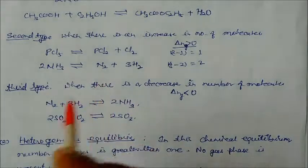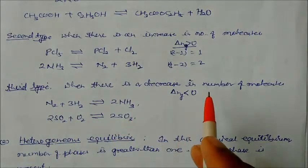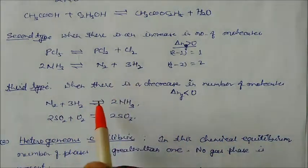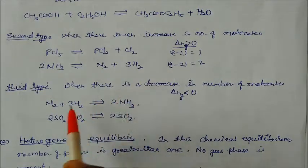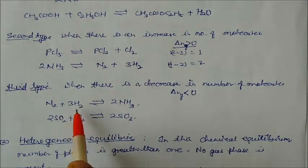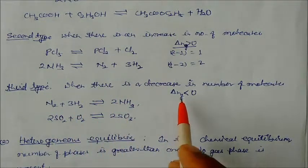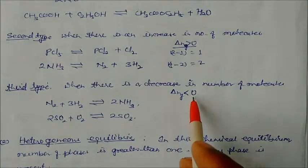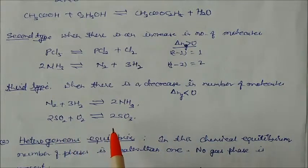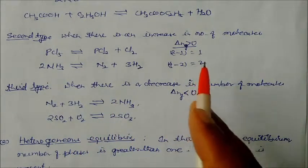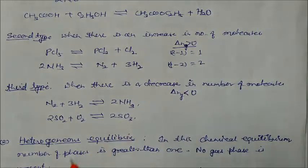In the third type, there is a decrease in the number of moles — Δn(gas) < 0. For example, N₂ + 3H₂ ⇌ 2NH₃: the number of gaseous moles is less than zero, meaning it is negative. This classification will help you solve problems in the coming topics.